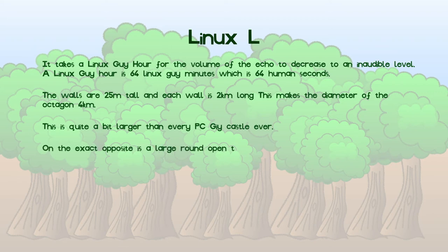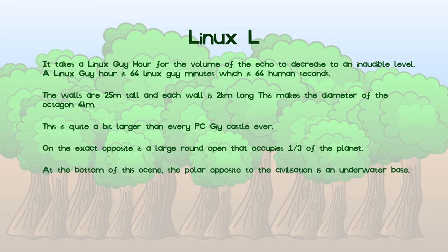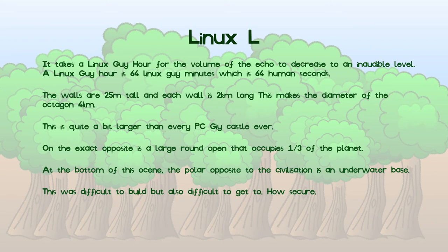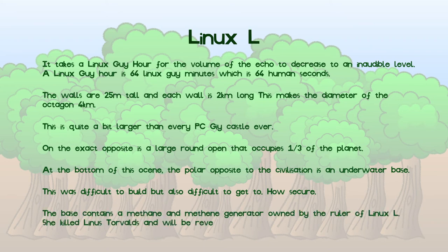On the exact opposite of this is a large, round, deep, uniform ocean which is deepest at its center. How geometric. It takes up a third of the entire planet. The deepest part is also a polar opposite of the civilization and contains an underwater base. This was very difficult to build but is also secure as it takes a lot of preparation to access. The base has a methane generator which is unique as methane is not a possible molecule. However the owner and ruler of Linux L manages to make it anyway. This mysterious ruler killed Linus Torvalds to become leader and shall be revealed in a later adventure.